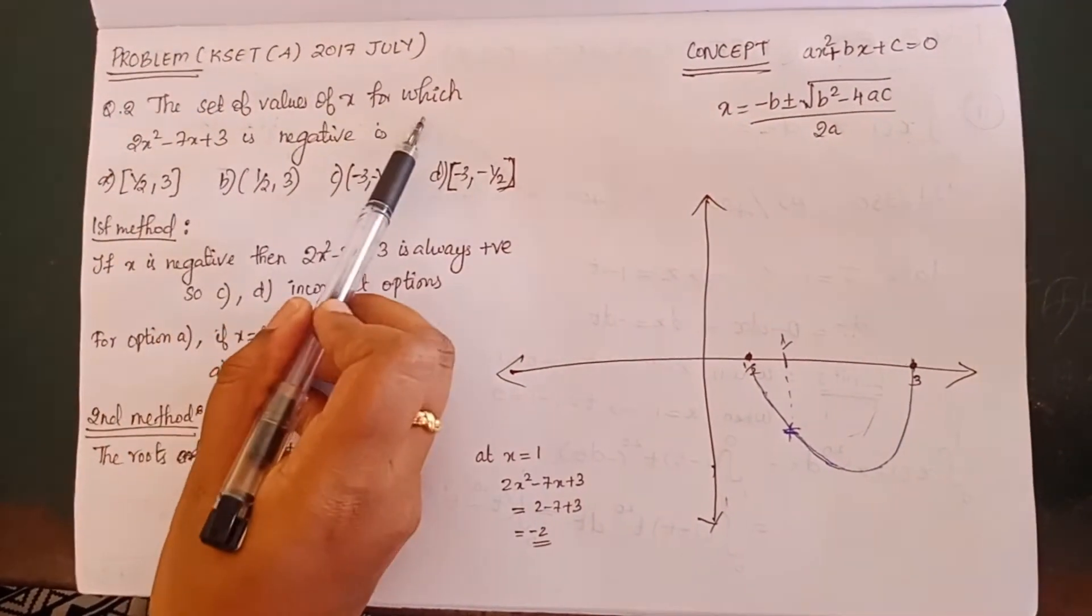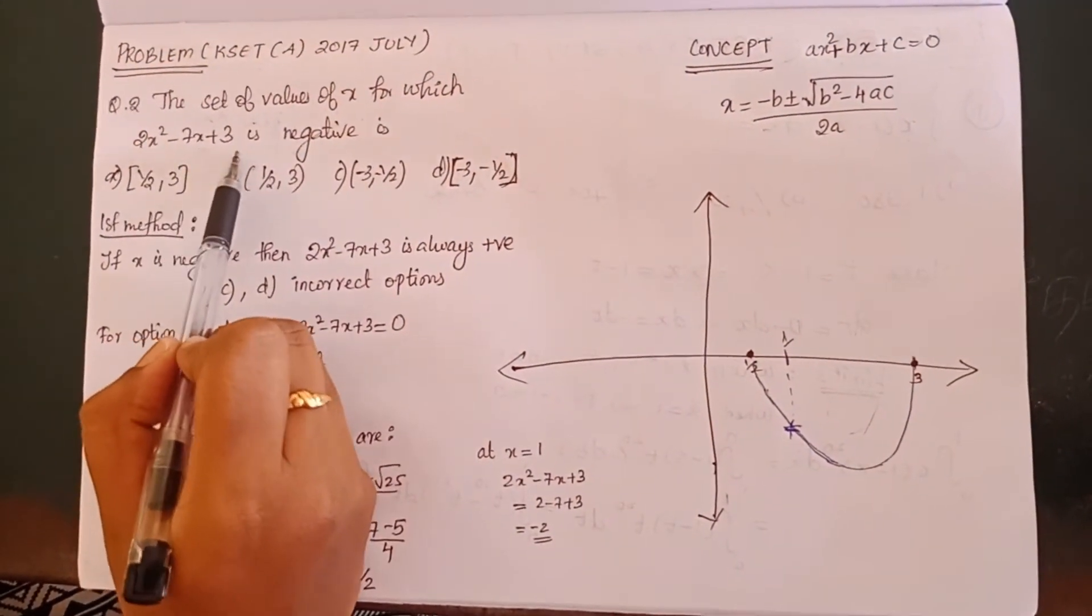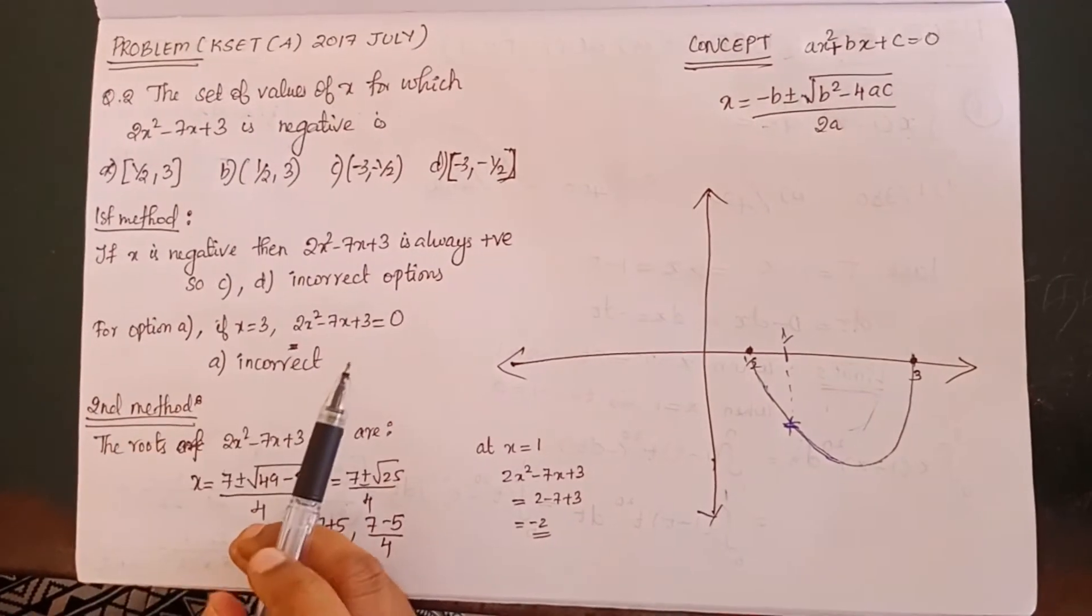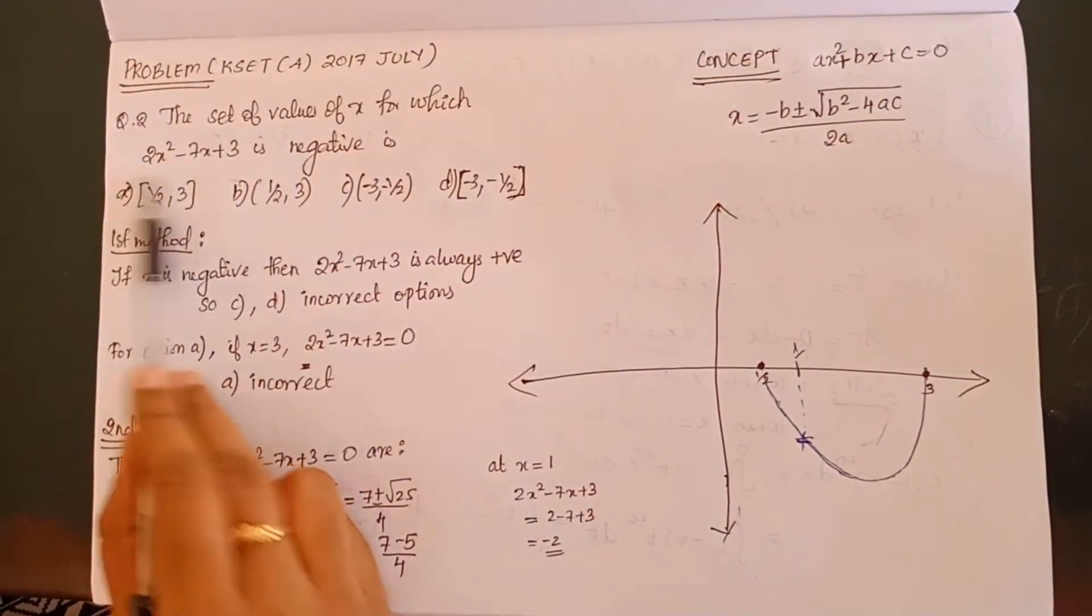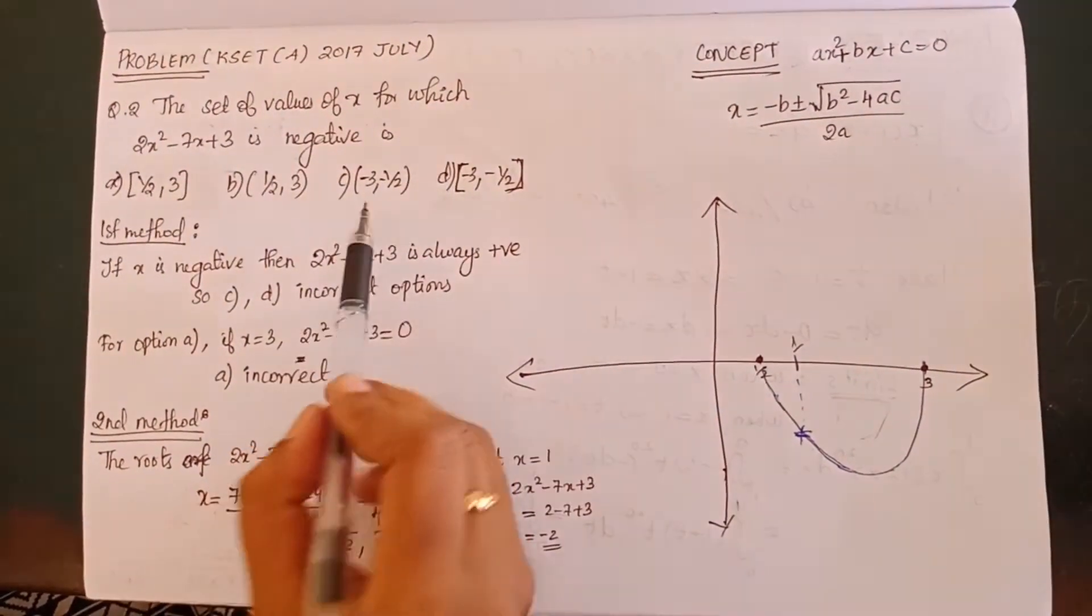The set of values of x for which 2x² - 7x + 3 is negative. If x is negative, then all the numbers will be positive, so there is option C and D.